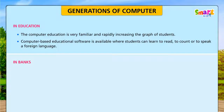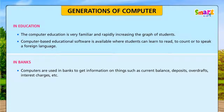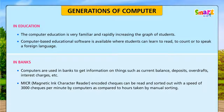In Banks: Computers are used in banks to get information on things such as current balance, deposits, overdrafts, interest charges, etc. MICR, that is, Magnetic Ink Character Reader: encoded checks can be read and sorted out with a speed of 3,000 checks per minute by computers, as compared to hours taken by manual sorting.